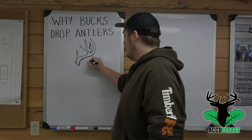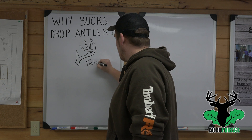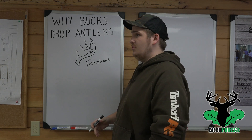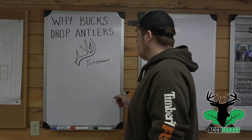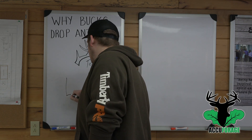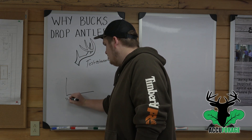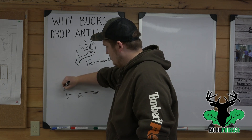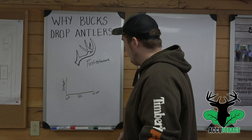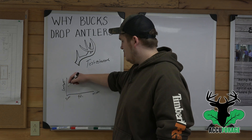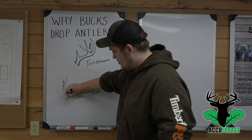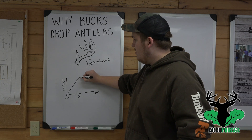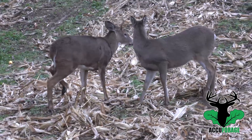Bucks will drop antlers due to the factor of testosterone, and it all depends on the levels of testosterone as to why and when they drop. Looking at this chart — summer in the middle, fall at the end, and winter at the end — these are levels of testosterone. As bucks are growing their antlers, testosterone levels increase and peak right in the fall time.